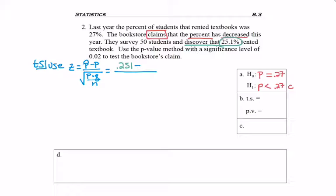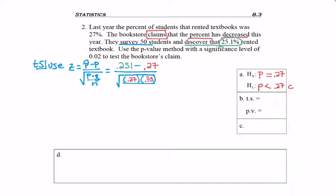Then I need to subtract p. You could reread the question, or you can look over at H0 to see what p equals: p equals 0.27. Then we divide by the square root of p — which is the same 0.27 — and then I need q, which is 1 minus 0.27, or 0.73. Then we divide by our sample size. As you reread the question, it says the survey of 50 students, so that's my sample size.